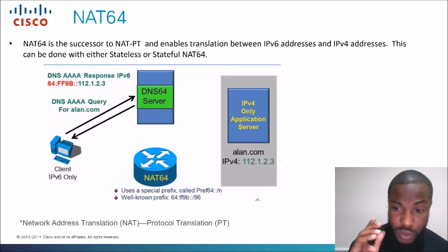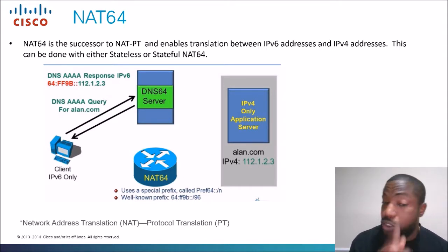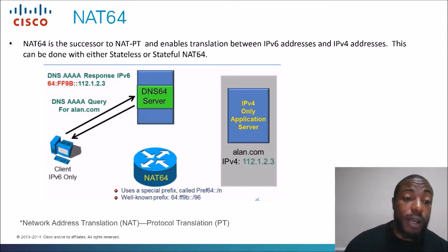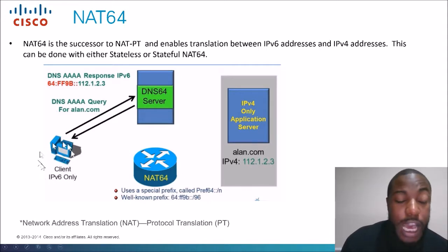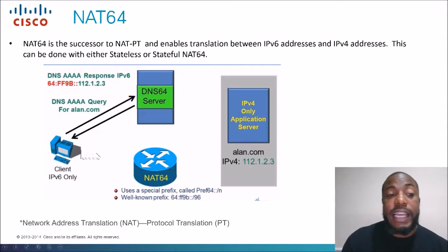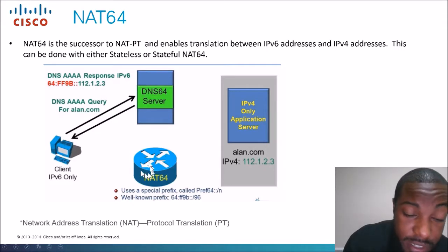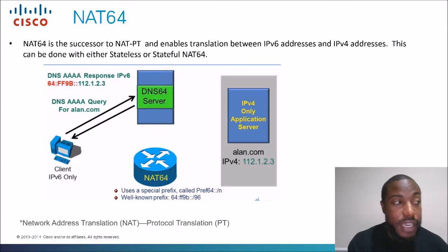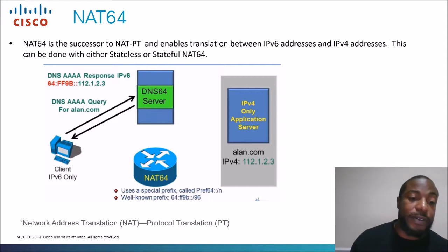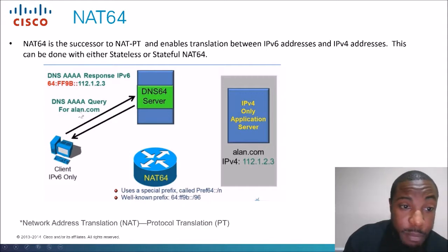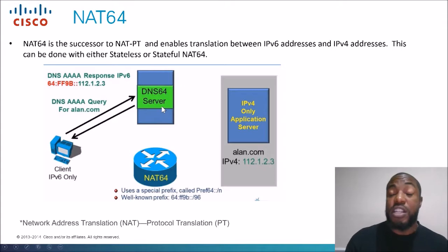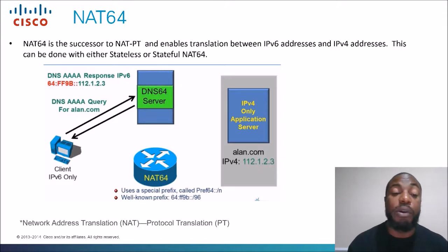Looking at this topology — let's say we have a client that speaks only IPv6. It has an IPv6 address and it needs to contact an IPv4-only application server. We have a router capable of NAT64, so it can translate IPv6 packets to allow communication with an IPv4 host. In this example, the client types in allen.com and queries the DNS server to find out what the IPv4 address is, because all we know is the name.